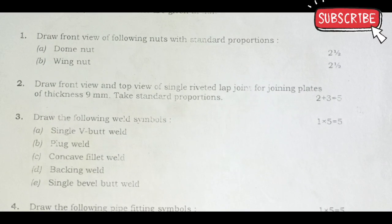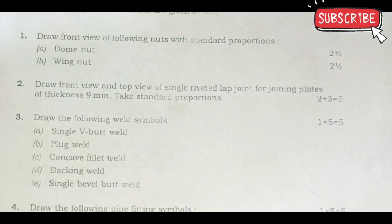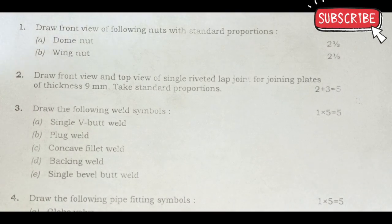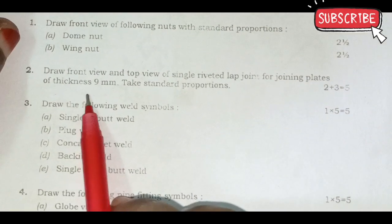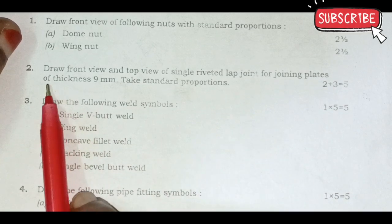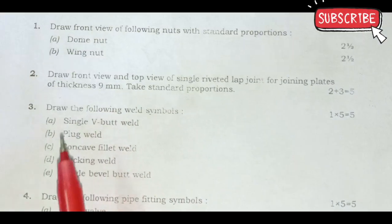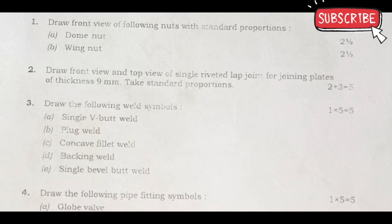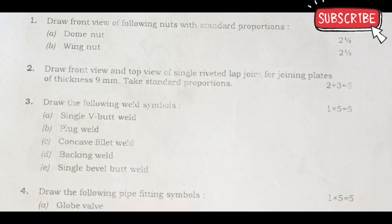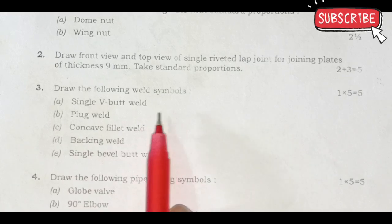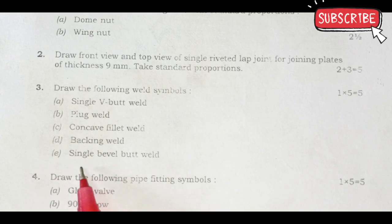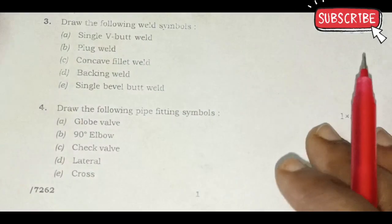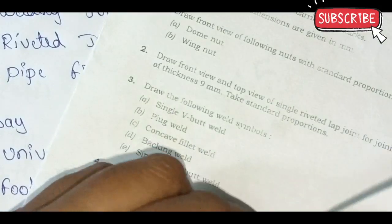First question: draw front view of the following nut with standard proportions - dome nut, wing nut. Question two or three: draw the front view and top view of single riveted lap joint for joining plates of thickness 9mm, take standard proportions. 9mm distance is 1.5 into d. Draw the following symbols: single V butt weld, plug weld, concave, and single bevel butt joint. Draw the following: globe valve, 90 degree elbow, check valve, lateral and cross. This is short questions.